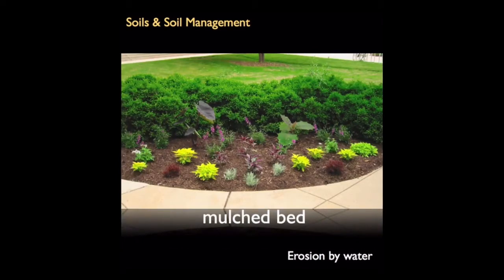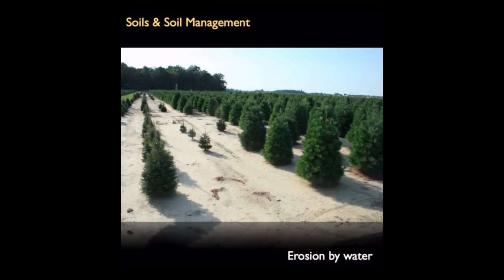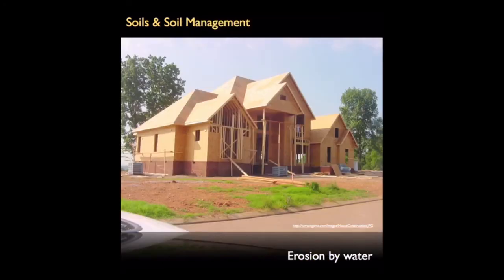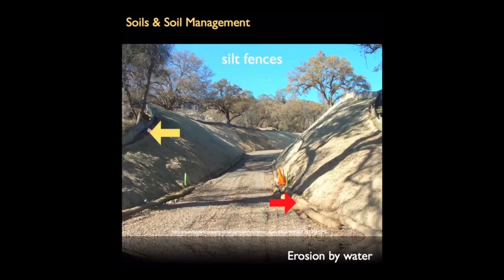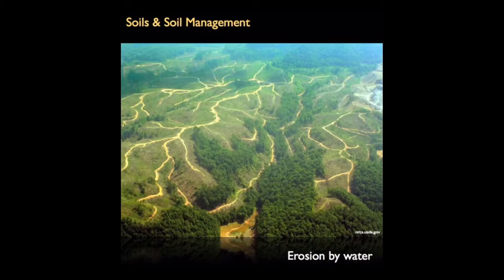Large row crops tend to leave bare ground exposed between the rows and are more prone to erosion than smaller, irregularly placed crops. Bare ground may be unavoidable for extended periods such as during construction and before the installation of landscapes. Fences to trap runoff are mandatory on many large projects. Soil erosion can be particularly severe in high rainfall regions such as the tropical rainforests after clear cutting to export timber or prepare the way for agriculture or other industries.